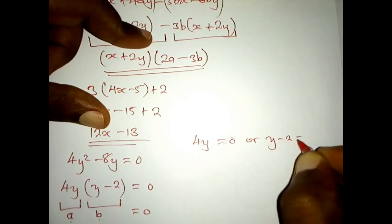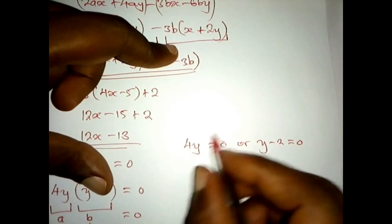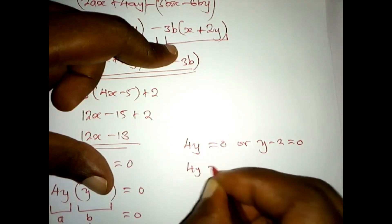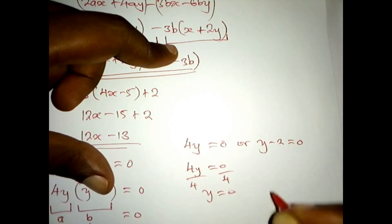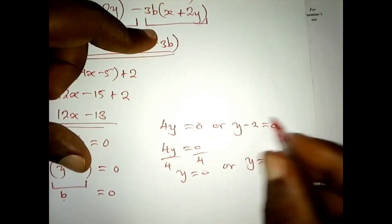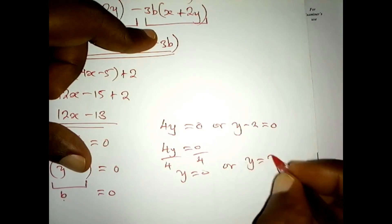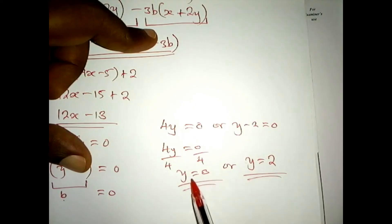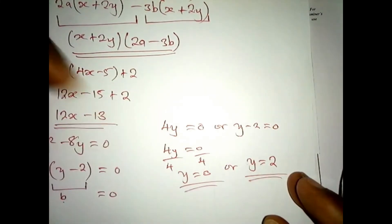So we say: either 4y = 0, or y − 2 = 0. For the first equation, divide both sides by 4 and we get y = 0. For the second equation, we make y the subject — 2 crosses to the other side and becomes positive, giving y = 2. So our two answers are y = 0 or y = 2.